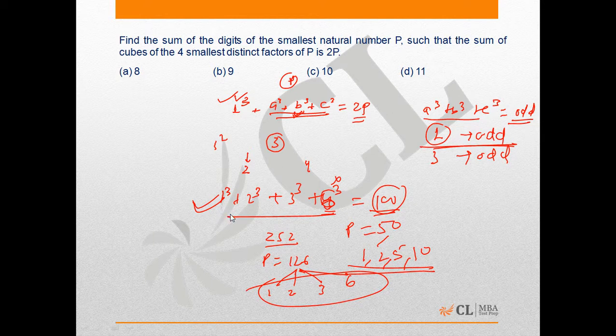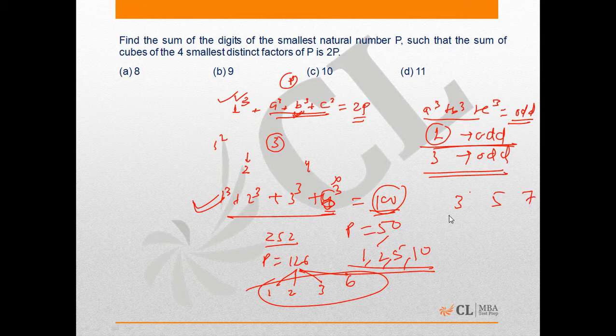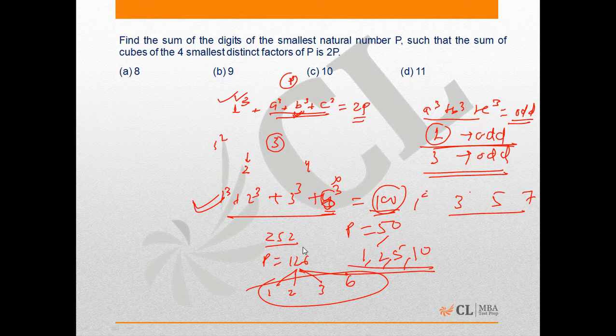Because when we take the case of 3 odd factors, then other factors will be 3, 5, 7, and the sum of 1³ + 3³ + 5³ + 7³ will definitely be more than the sum of 1³ + 2³ + 3³ + 6³. And this proves that 126 is the smallest possible value for P.